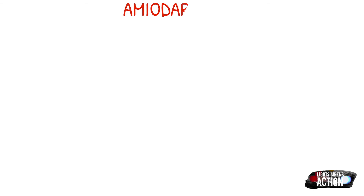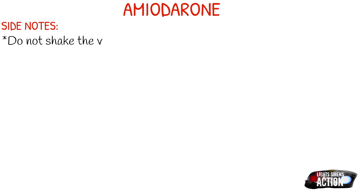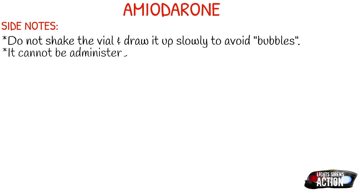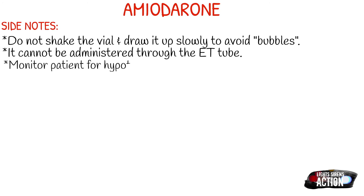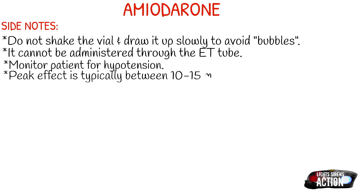A few side notes about amiodarone: do not shake the vial, and draw it up slowly to avoid bubbles. It cannot be administered through an endotracheal tube — unlike many other medications. Monitor your patient for hypotension, especially if they are on beta blockers or calcium channel blockers. The onset is immediate, but the peak effect is typically between 10 to 15 minutes. Be aware that it may cause new dysrhythmias or worsen the current one.